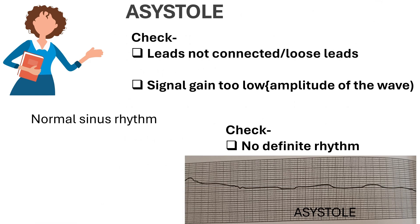When you see an Asystole on the monitor or ECG, go and check immediately - check the leads. Maybe the leads are not sticky or the wire is loose. Maybe the defibrillator or ECG machine itself is having some issues, due to that the signal gain may be too low - the amplitude of the wave. So the first thing is go and check the patient.